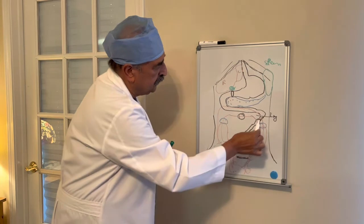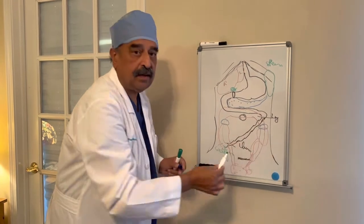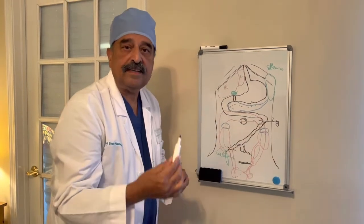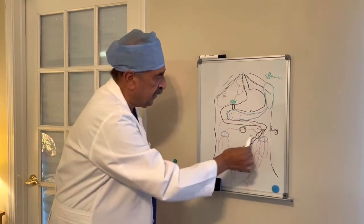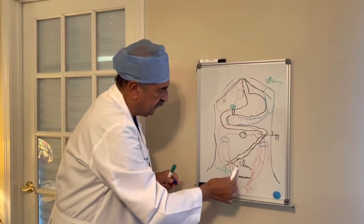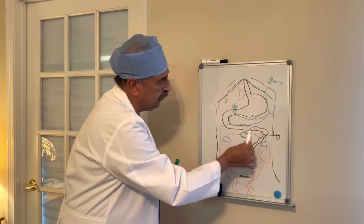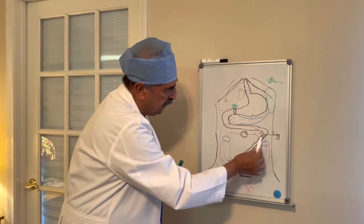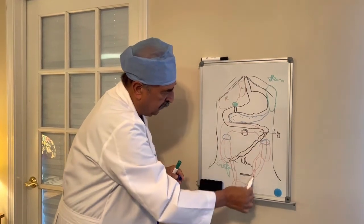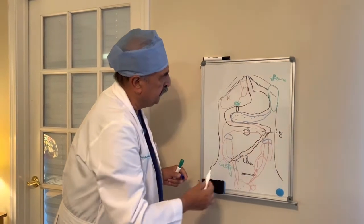The small bowel we also call the intestine. So this is the intestine, appendix, ascending colon, transverse colon, and the rectum.